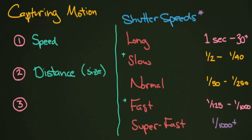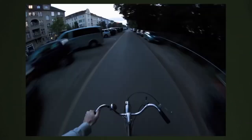The third consideration is how much motion you want to convey. How much do you want that subject to blur? Do you want the object completely blurred out, or just slightly? That will determine which shutter speed you select.